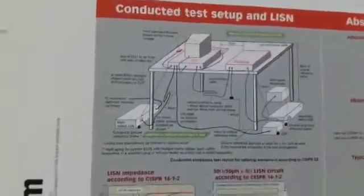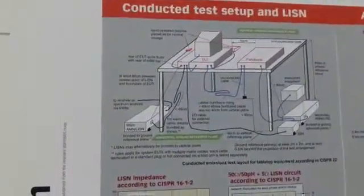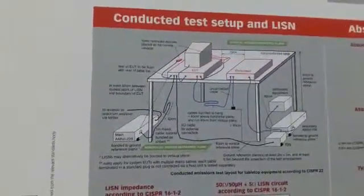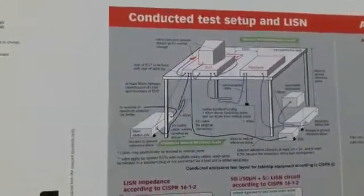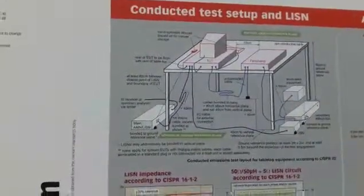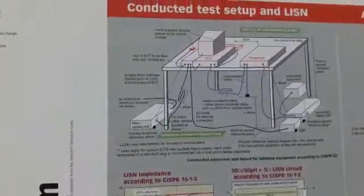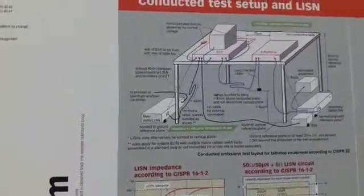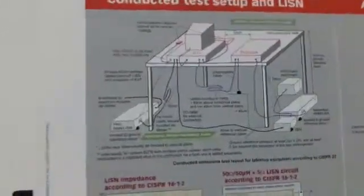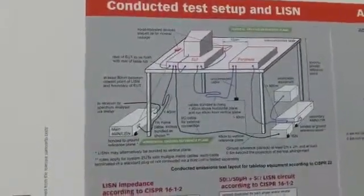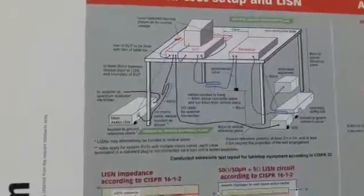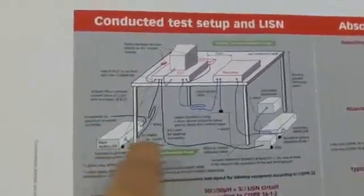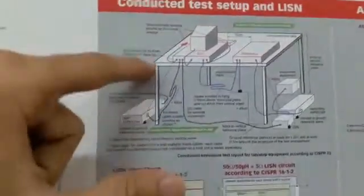There are some specific requirements. First, the LISN should be placed on a metallic plate connected to ground. The cable from the LISN to the EUT should be approximately one meter. The equipment under test must be placed on a wooden table that is isolated from ground, and the distance between the EUT and the LISN should be 80 centimeters. The equipment height should also be 80 centimeters.